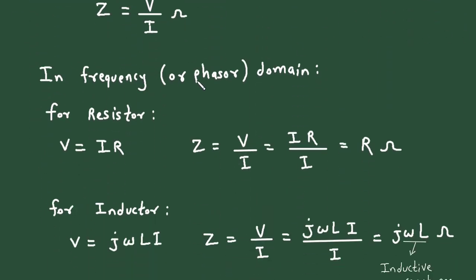In the frequency or phasor domain, for a resistor, voltage is equal to current into resistance — this is Ohm's law. Now impedance is equal to voltage divided by current. So in place of voltage, if we substitute the value I into R, this I and this I will get cancelled. Therefore impedance is equal to resistance. This is for the resistor only.